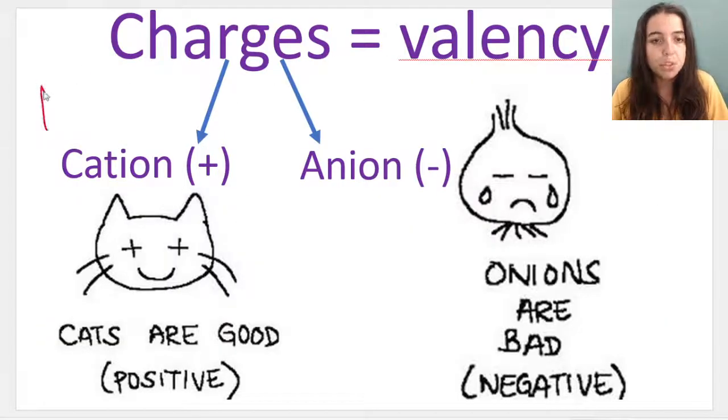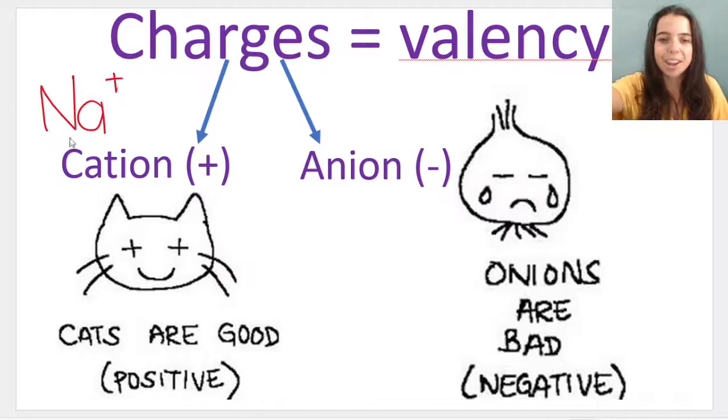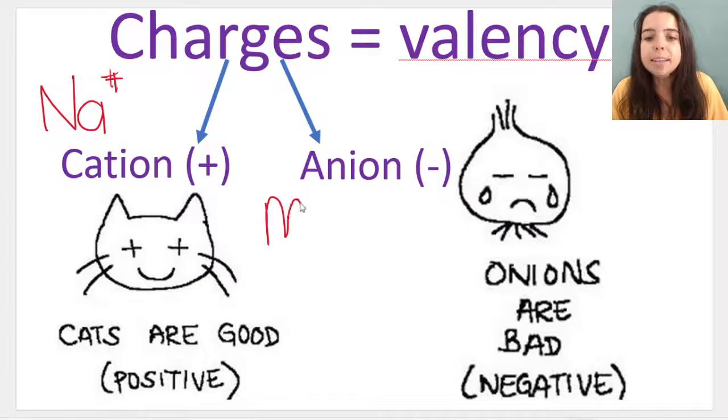Sodium. The sodium ion. Na plus. Guys, sodium ion is a positive ion because sodium loses an electron. Therefore, it has lost one electron, so it gets a little plus.